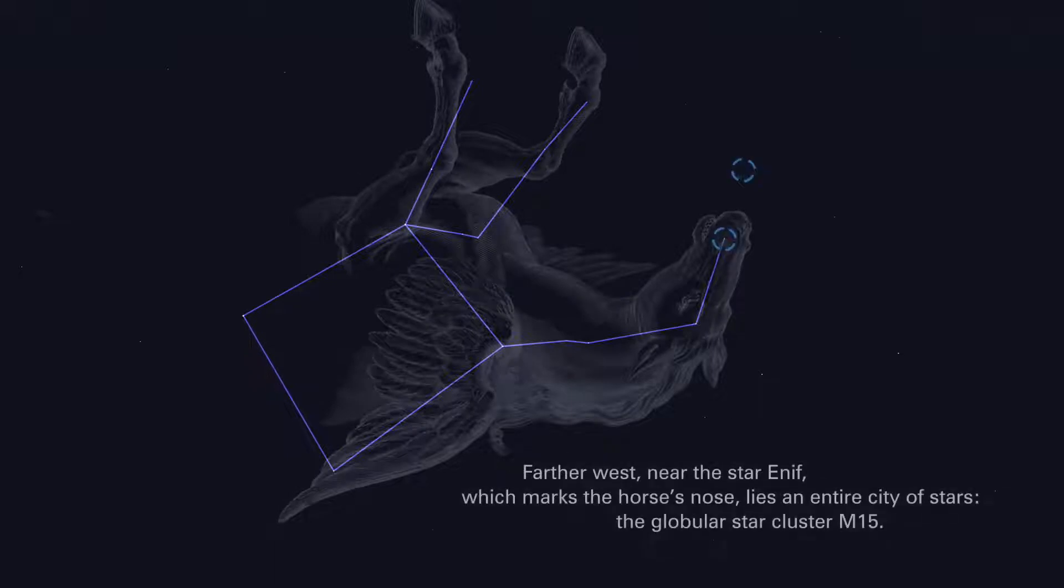Farther west, near the star Enif, which marks the horse's nose, lies an entire city of stars, the globular star cluster M15.